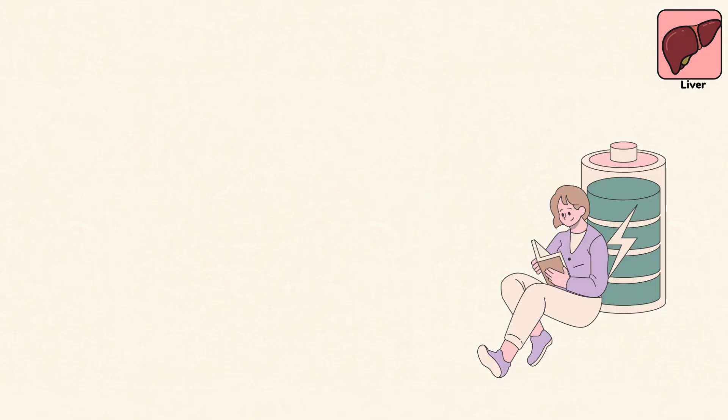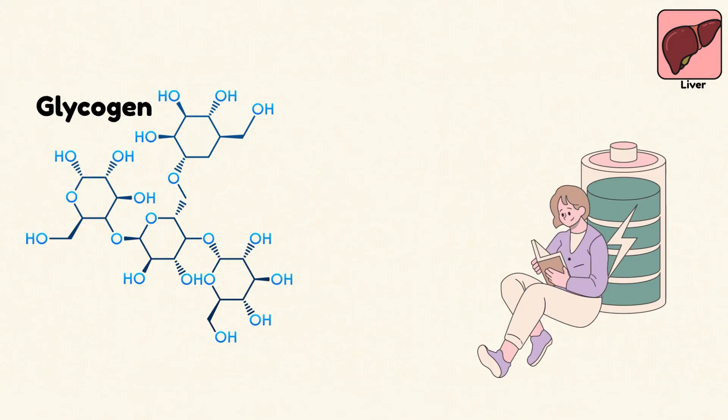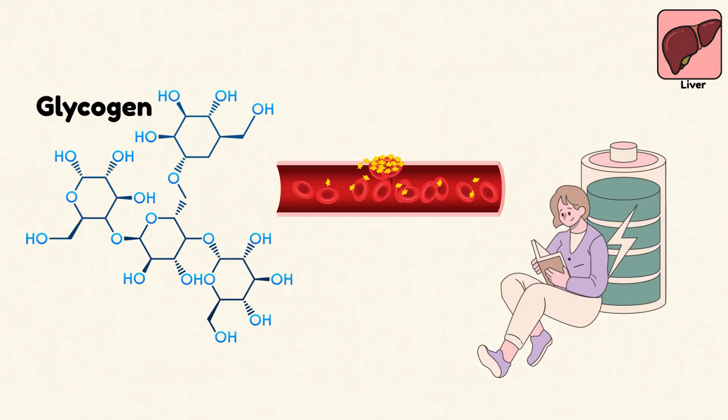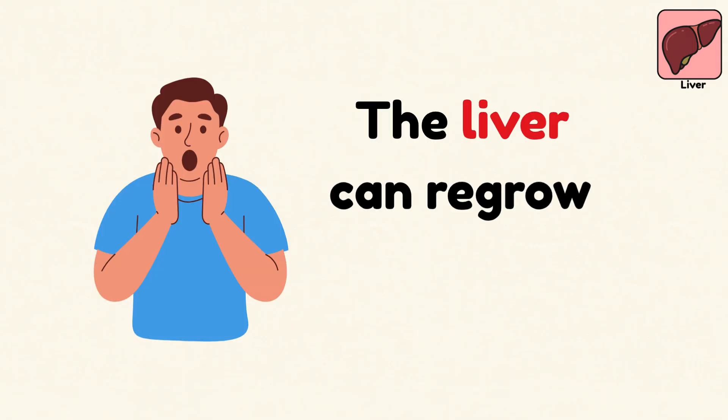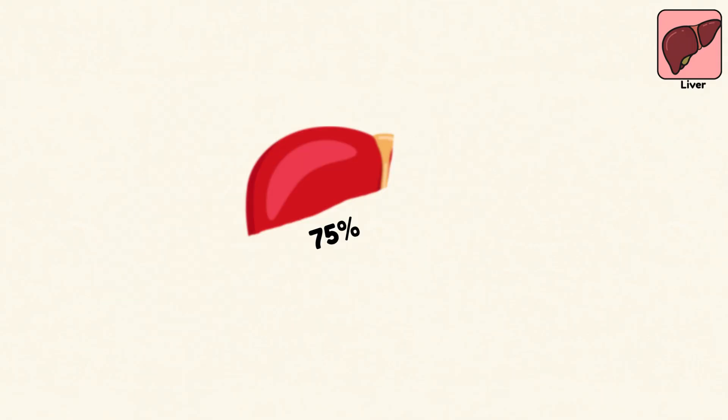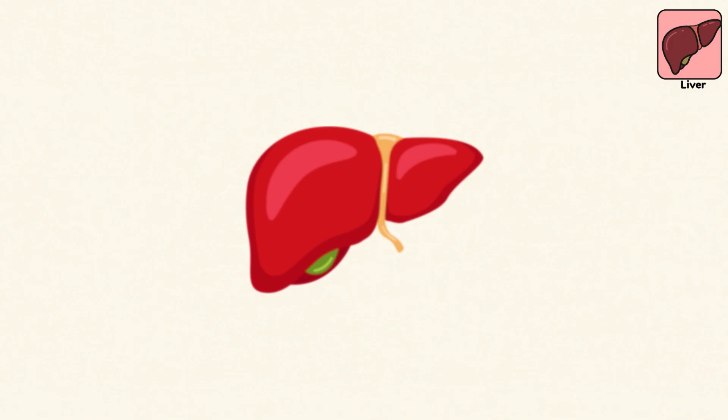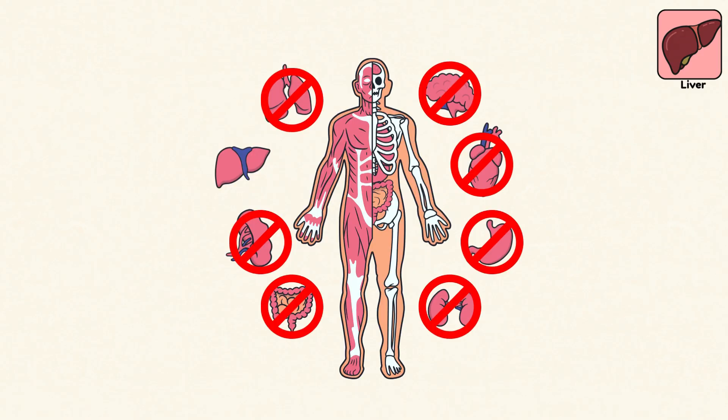The liver also stores energy in the form of glycogen and helps manage blood clotting. But here's the marvel: it can regrow. Cut out 75% of it, and it'll rebuild itself like nothing happened. No other internal organ comes close to that resilience.